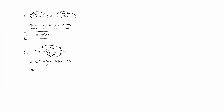Our next step is combining like terms: negative 4x and positive 3x. The final answer is x² - x - 12.